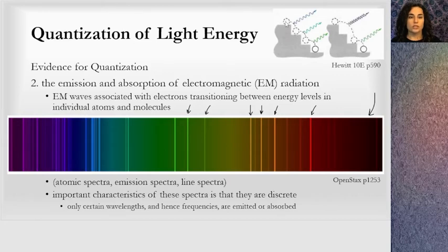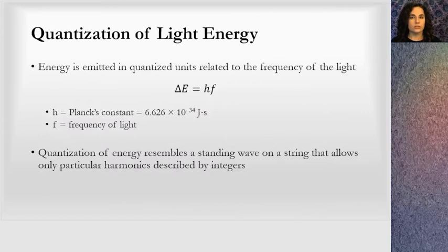And you can see the picture up here. When an atom transitions between states, photons are emitted. And depending on those energy levels, it determines the energy of that light being emitted. We call this atomic spectra, emission spectra, or line spectra. And the important characteristics of these spectra is that they are discrete. You can see that in here. Here's one. They're very discrete. They're very precise values.